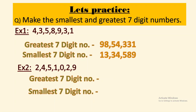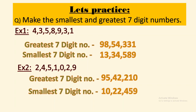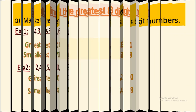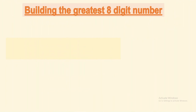For the greatest number: 9, 5, 4, 2, 2, 1, 0 — giving us 95 lakh 42,210. For the smallest, we place 1 first, then 0, then 2, 2, 4, 5, 9 — that gives us 10 lakh 22,459. Isn't it easy, children?